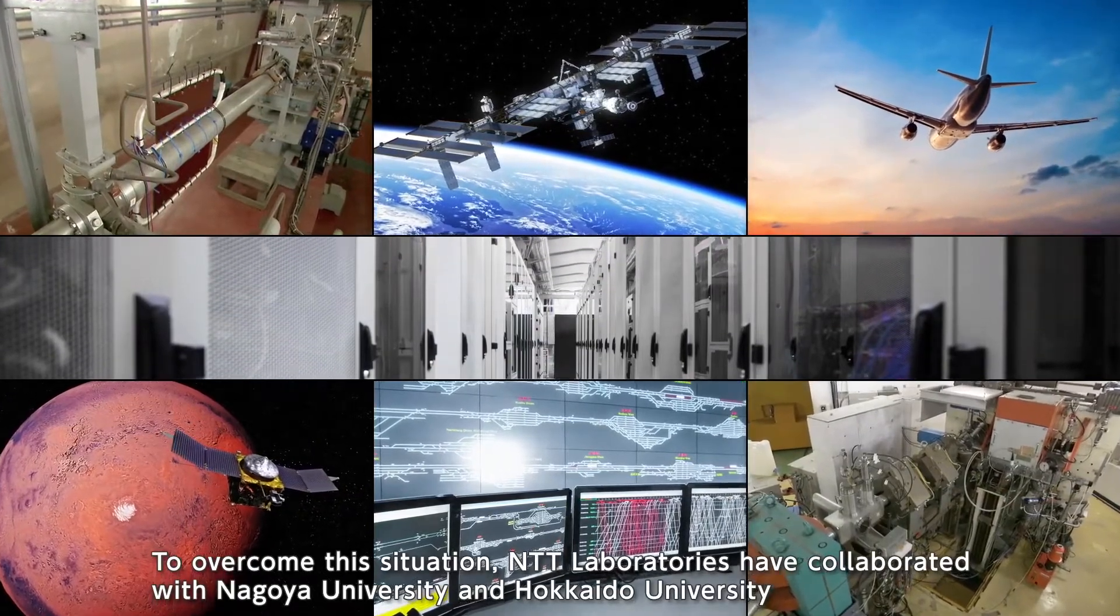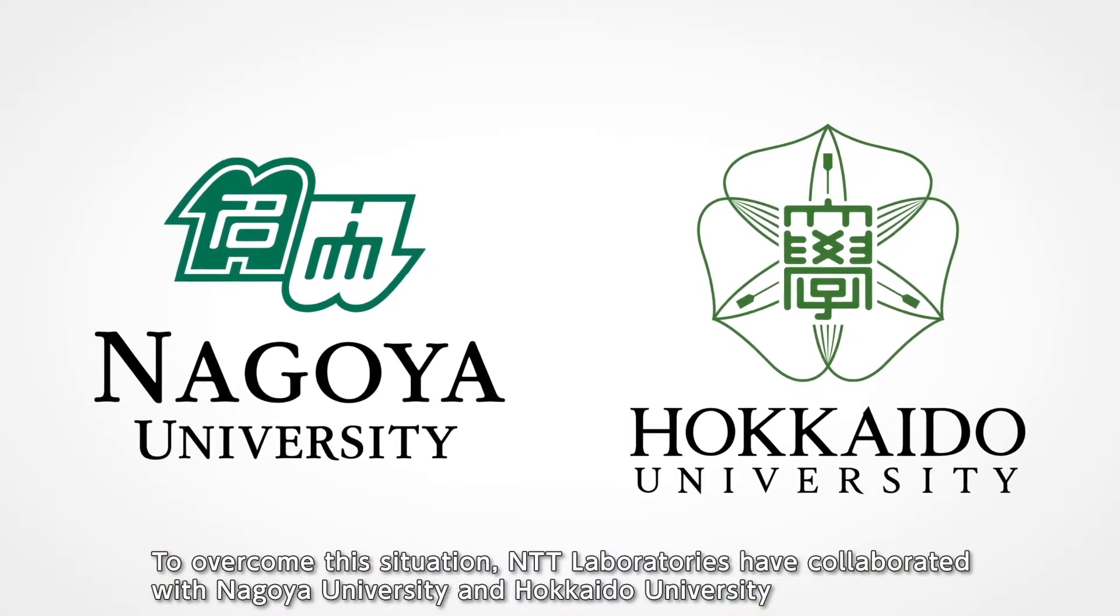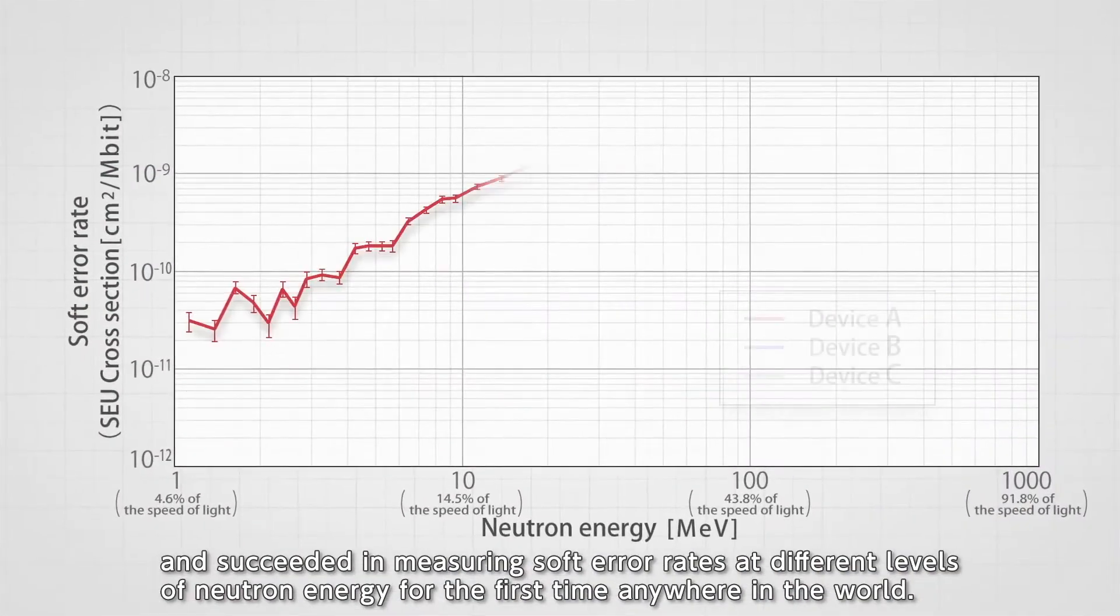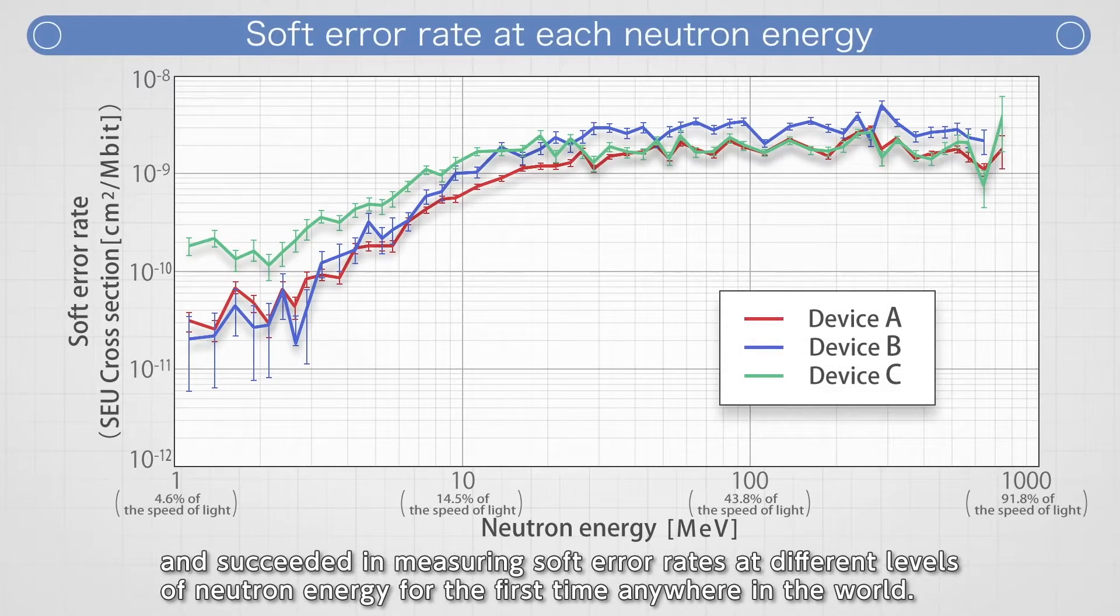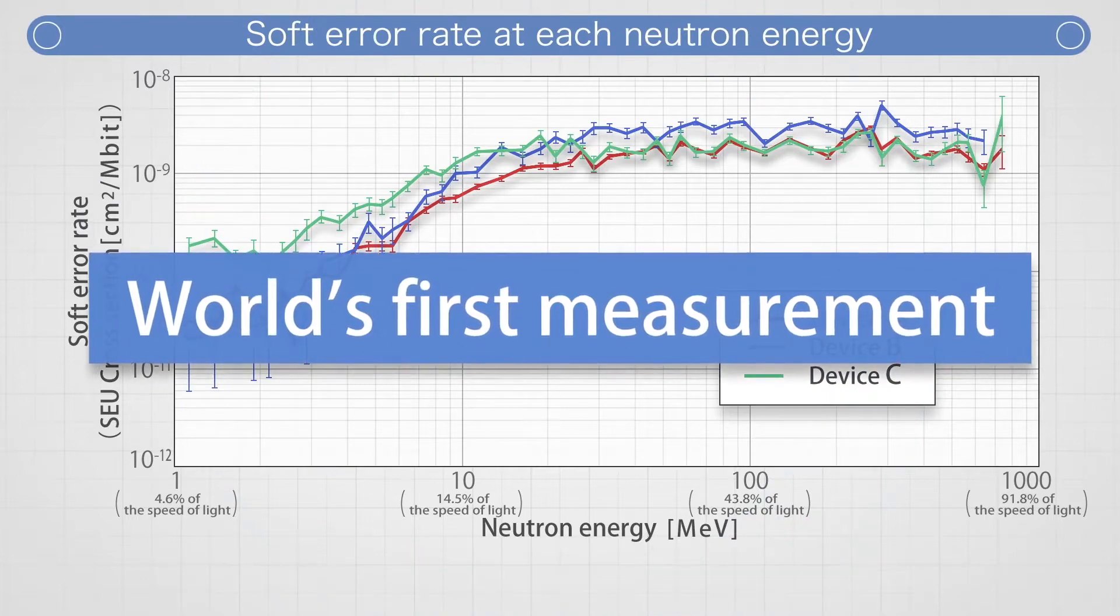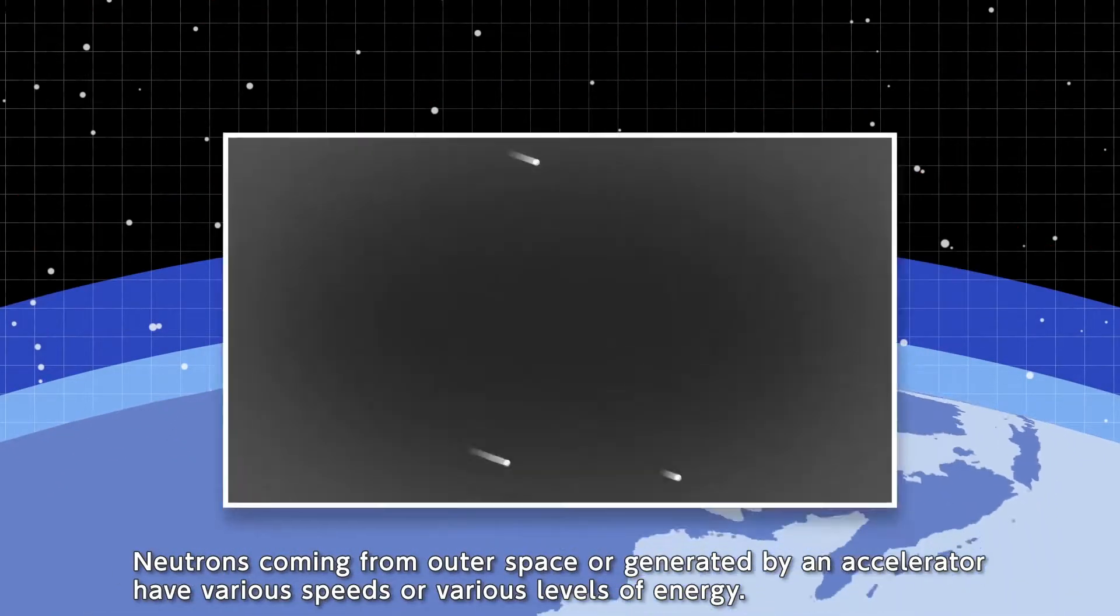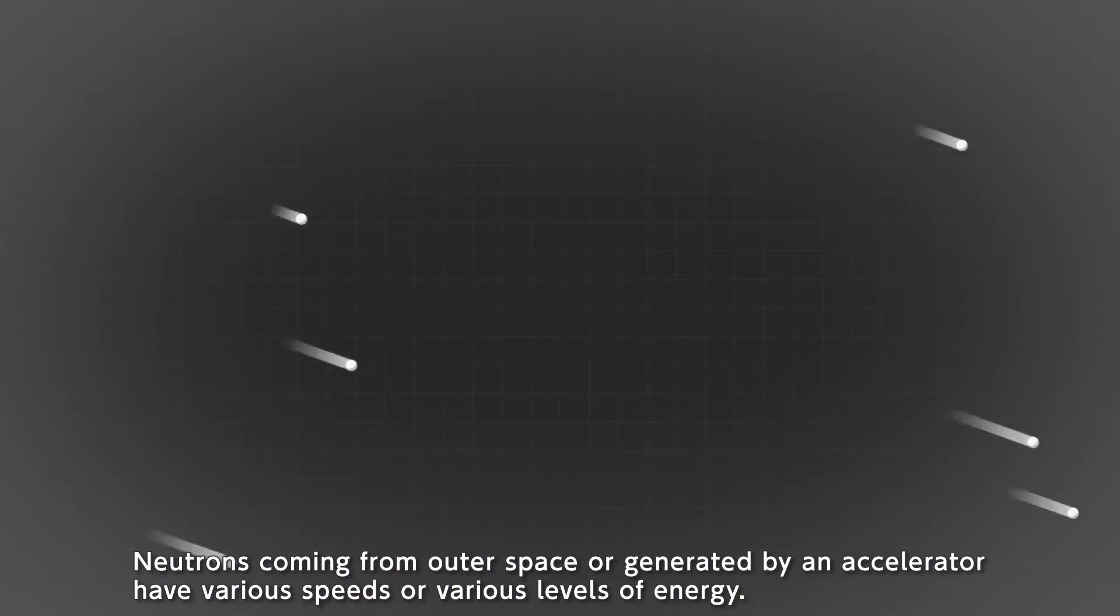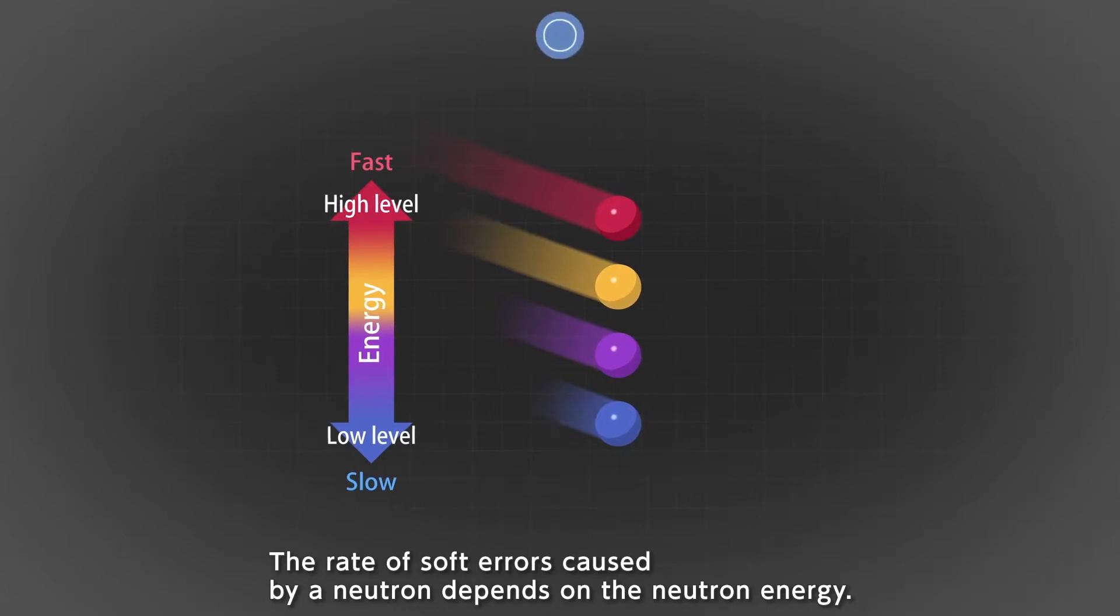To overcome this situation, NTT laboratories have collaborated with Nagoya University and Hokkaido University and succeeded in measuring soft error rates at different levels of neutron energy for the first time anywhere in the world. Neutrons coming from outer space or generated by an accelerator have various speeds or various levels of energy. The rate of soft errors caused by a neutron depends on the neutron energy.